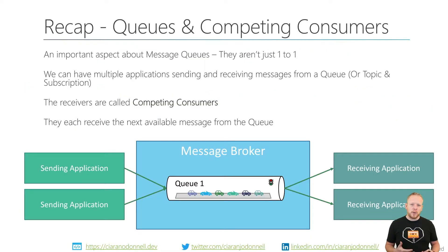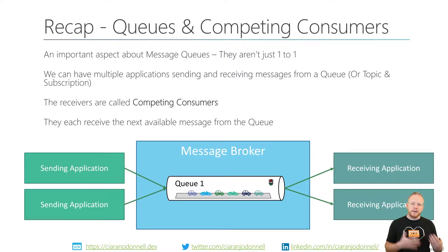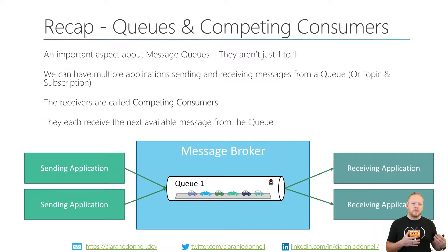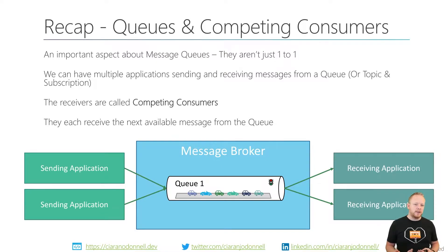Just a quick recap of things we talked about before. One of the things that's really important about message brokers is the competing consumers pattern. When we're talking about queues and even topics and subscriptions, we can have more than one producer sending messages into a queue or to a topic, and more than one receiver receiving from a queue or from an individual subscription. We call these competing consumers — every time one of them is ready to consume a message, they get the next available message from the front of the queue or from the subscription.